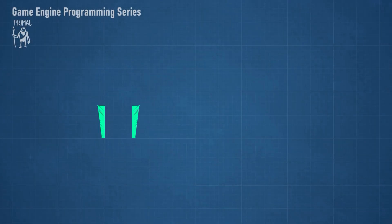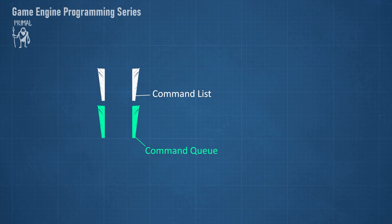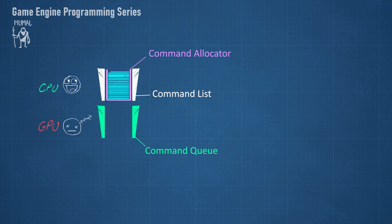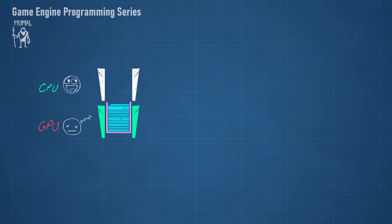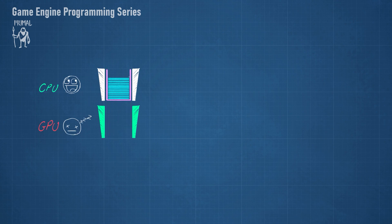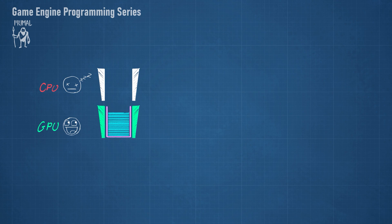We submit work to the GPU through a command queue — an interface that accepts command lists and executes the commands on the GPU. A command list is used to record the work we'd like done on the GPU in the form of commands. Recording commands happens on the CPU. A command allocator provides and manages the memory required to store those commands. The simplest form of submitting work is to first record commands on the CPU and then execute them on the GPU. To ensure both CPU and GPU take turns, we need to synchronize work submission using signaling fences and events.